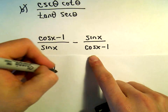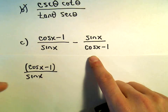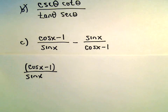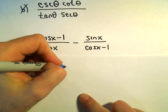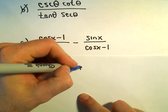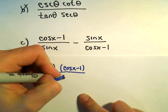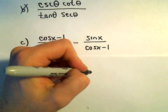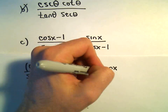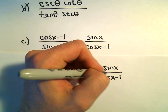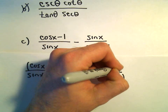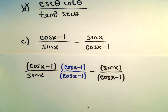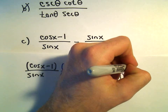We've got cosine x minus 1 over sine x. Notice there's a cosine x minus 1 in the denominator of the second fraction. So for this first fraction I'm going to multiply the numerator and denominator by cosine x minus 1. And for the second fraction — sine x over cosine x minus 1 — this fraction is missing the sine x factor, so I'm going to multiply the numerator and denominator by sine x.